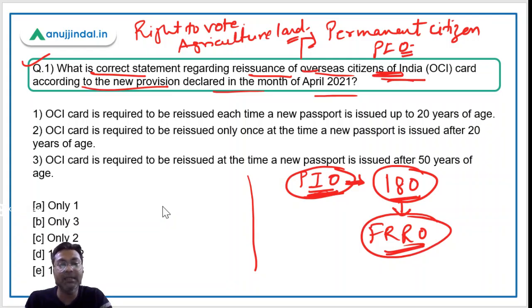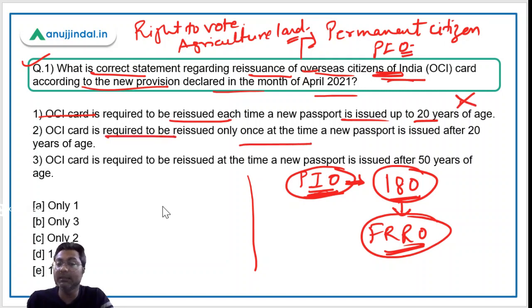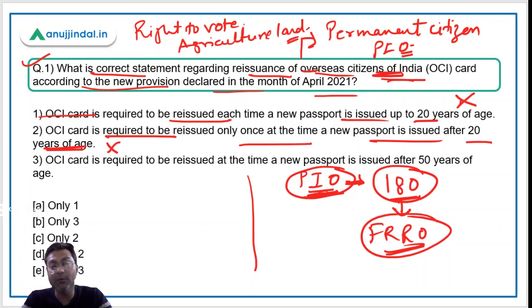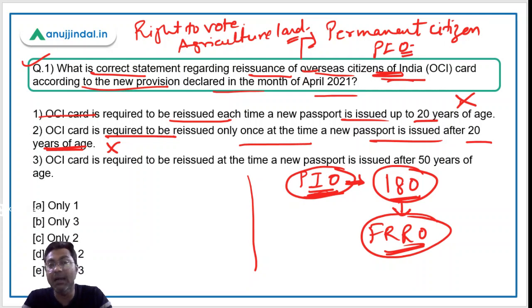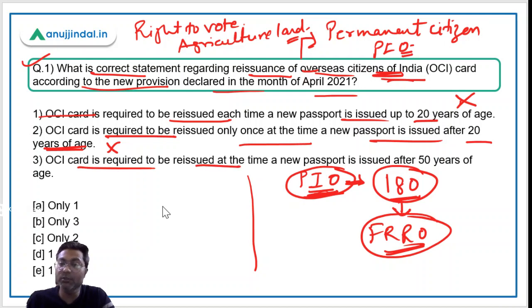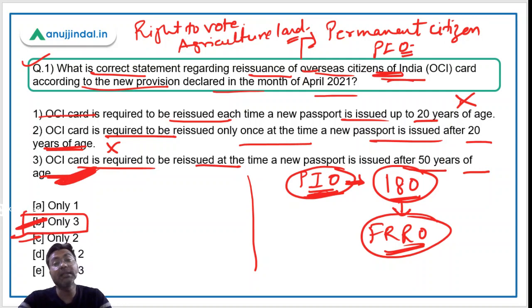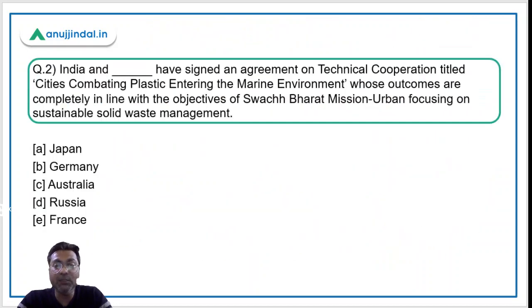Now the answer to question one. The statement that OCI card must be reissued each time a new passport is issued up to 20 years of age is incorrect — that was the old provision. The correct new provision is that OCI card is required to be reissued only once when a new passport is issued after 20 years of age. If a person becomes an OCI cardholder after 20 years, no reissuance is needed. Therefore, option B — only statement three — is the correct answer.